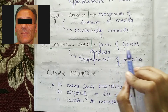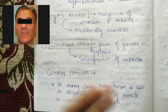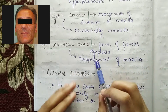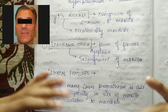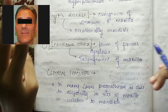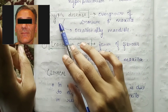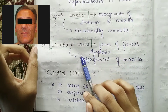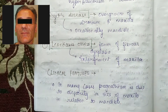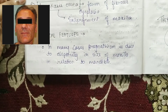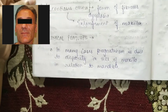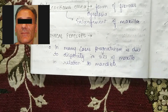Leontiasis ossea is a form of fibrous dysplasia causing enlargement of the maxilla. So in these cases we are seeing two things in the maxilla associated with Paget's disease.